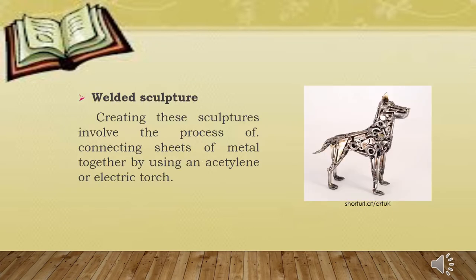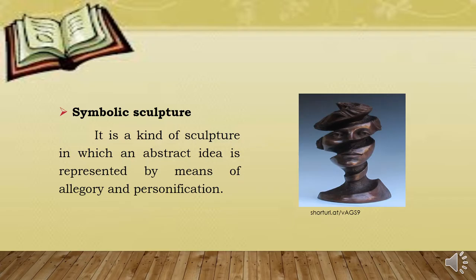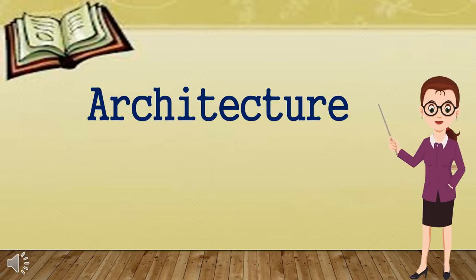Welded sculptures. Creating these sculptures involves the process of connecting sheets of metal together by using an acetylene or electric torch. Next is glass sculpture — a kind of sculpture where the medium of expression used by the artist is glass. Last but not the least for the general kinds of sculpture is symbolic sculpture. It is a kind of sculpture in which an abstract idea is represented by means of allegory and personification.